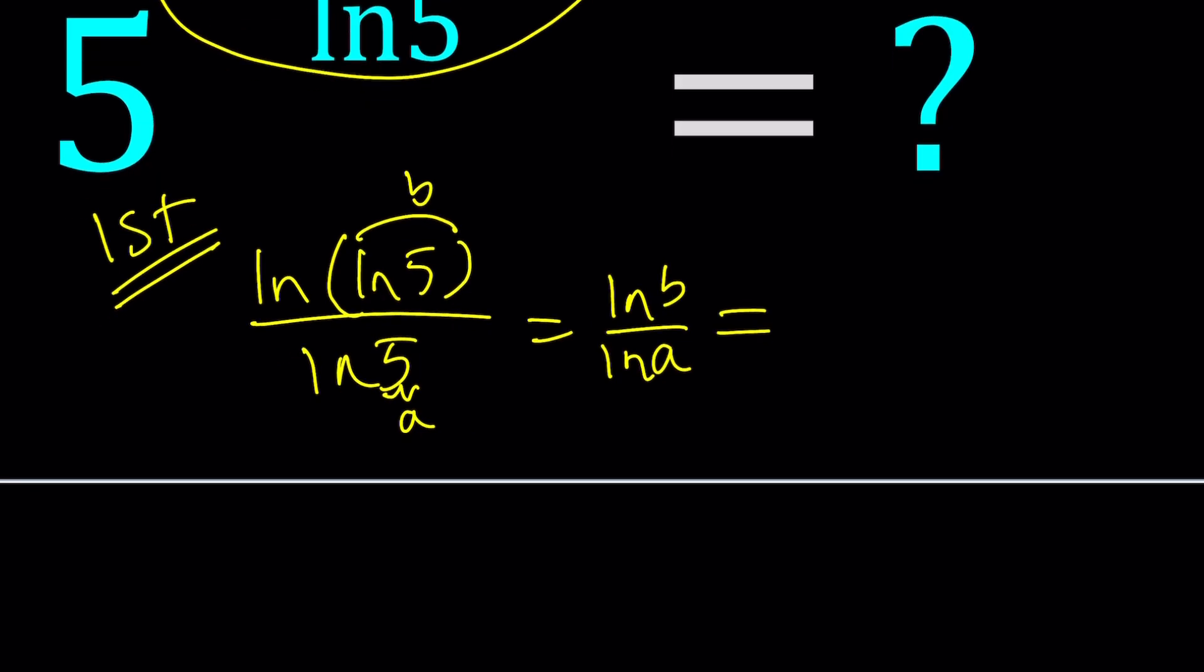There's something called change of base. Change of base says, if you have log b with base a, you can write it like this, where b goes on top and a goes here. And this doesn't have to be ln. It could also be log, just like base 10, or it could be any base x you wish for.